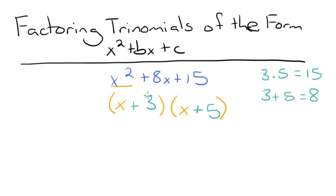So if we FOIL this, we'll have first is x times x, which is x squared, plus outer x times 5 is 5x, and then inner is 3 times x, which is 3x, so plus 3x, and then last is 3 times 5, which is 15, so plus 15.